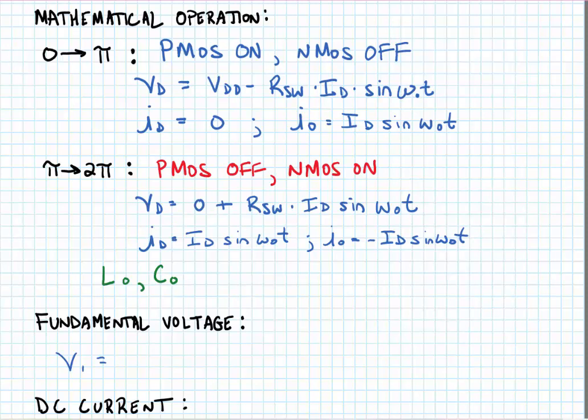It's important to note that the drain voltage and current waveforms do not overlap ever, and we're going to see that this leads to an efficiency enhancement. And also we should note that the resonant circuit, L naught and C naught, prevent all but the fundamental current from flowing to the load.